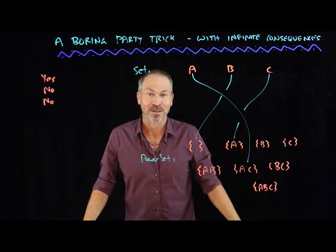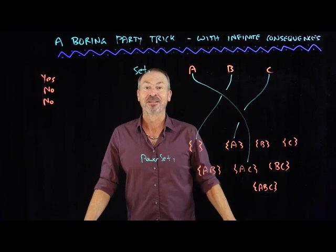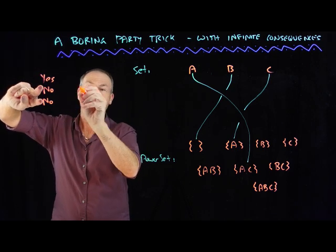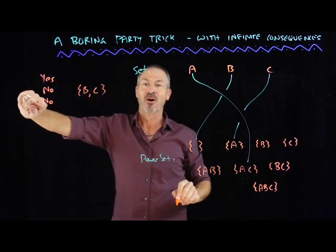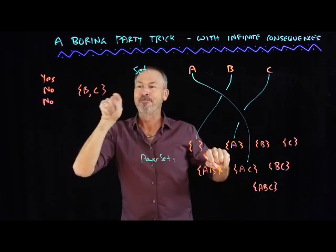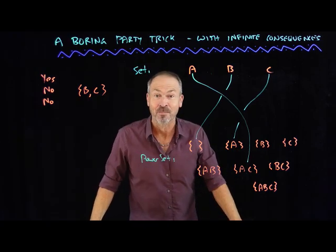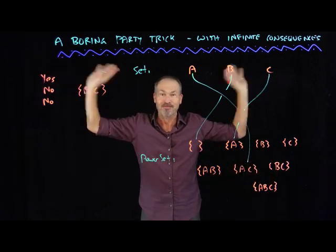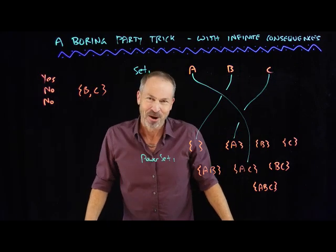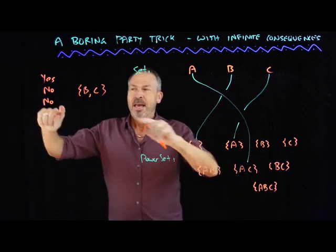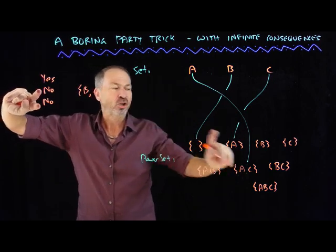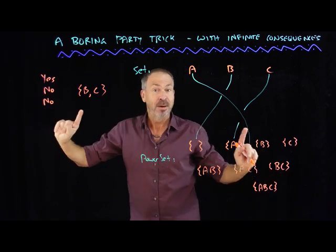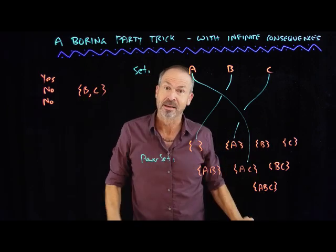And now comes the magic moment. You're going to announce to the world a subset that's not leashed. What you do: take all the no-answers and write what letters gave you the no-answers — in this case B and C — and then announce to the party: I bet the set {B, C} is unleashed. Look at the page and sure enough, there is no leash to {B, C}. But it's not a very exciting party trick — it is, however, an interesting puzzle. Why would all the no-answers correspond to an unleashed set?